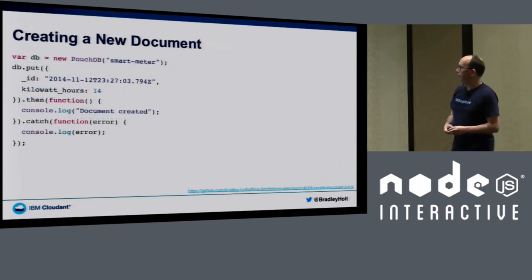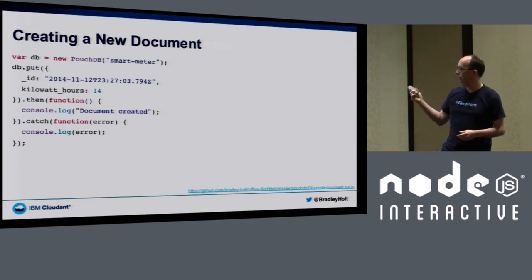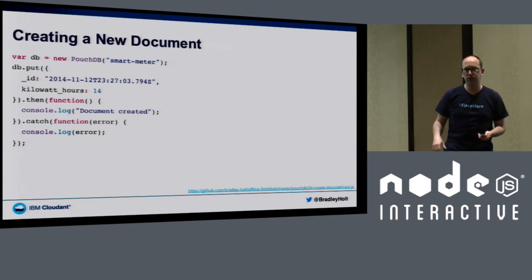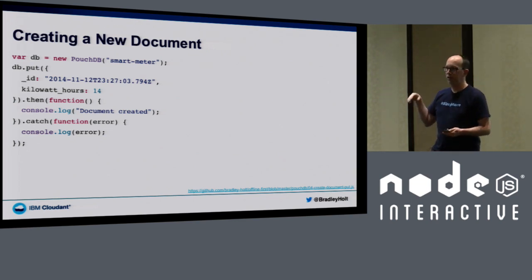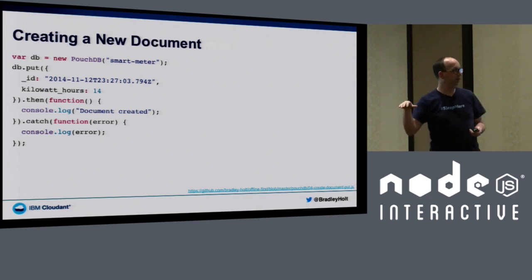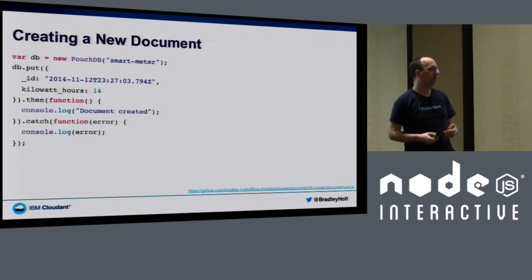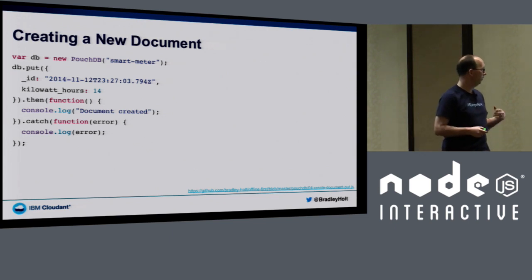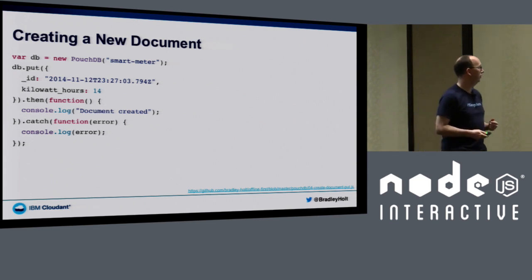To create a new document, use the `db.put()` method and pass a JSON object with an `_id` field. You could also use `db.post()`, which will choose an ID for you. For the most part, you want to use `put` and specify an ID, because there's a primary index based on that `_id` field that you can query against. If you have a meaningful natural key as the primary index, it makes querying the database easier.